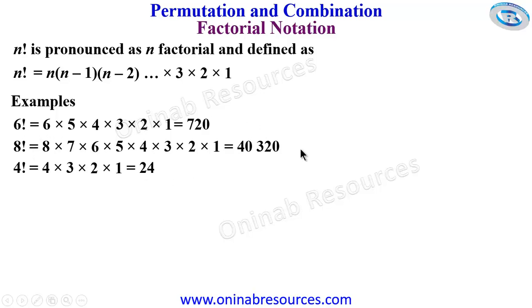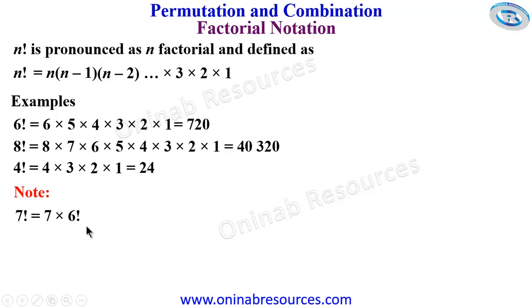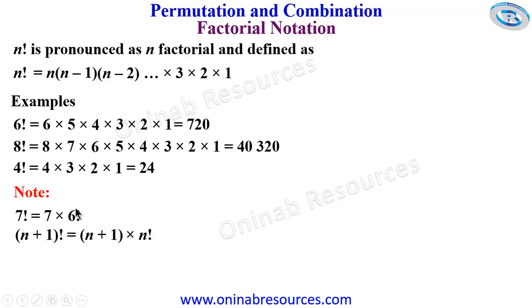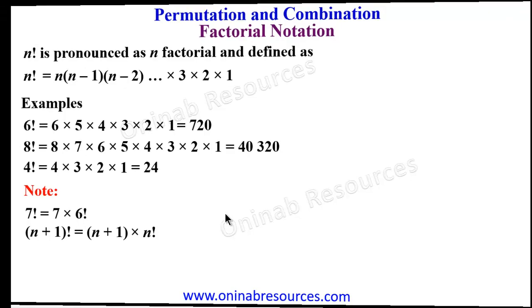Note that 7 factorial can be expanded in a short form as just 7 times 6 factorial. You can also expand it as 7 times 6 times 5 factorial, or 7 times 6 times 5 times 4 factorial — whichever is easier for your simplification. Also, n plus 1 factorial equals n plus 1 multiplied by n factorial. Remember it is continuous subtraction of 1 to get the consecutive multiplier.